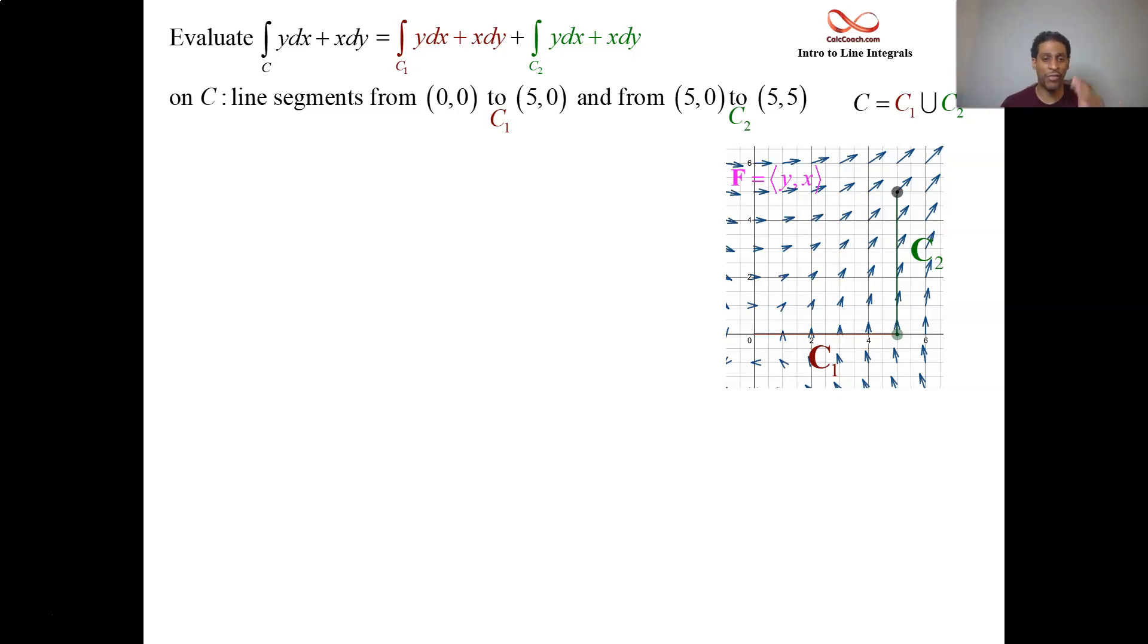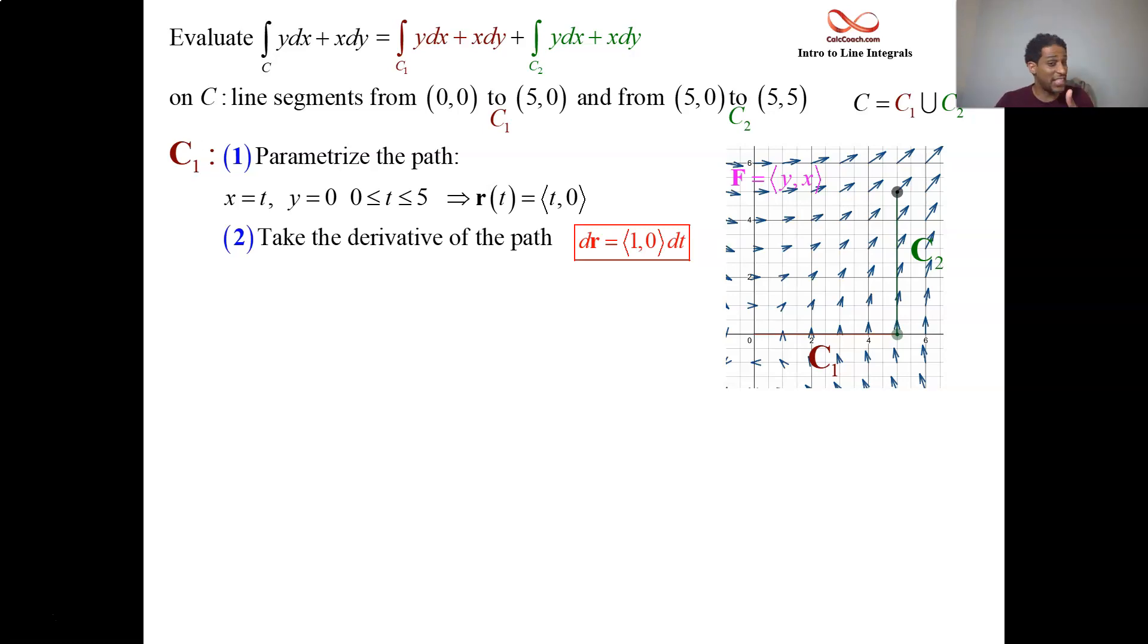Let's go ahead and calculate it. Parametrize the path from 0,0 to 5,0 along the x-axis. We did it in a previous video. We said we should just let x equal t. And for sure, y is equal to 0 along the x-axis. Whatever x does is what t does. x goes from 0 to 5, so t should go from 0 to 5. We throw these into a vector, t,0, that's our path vector. We take its derivative, which is 1,0 with a dt.